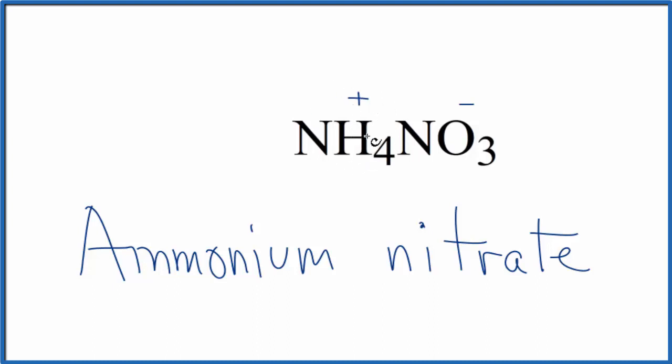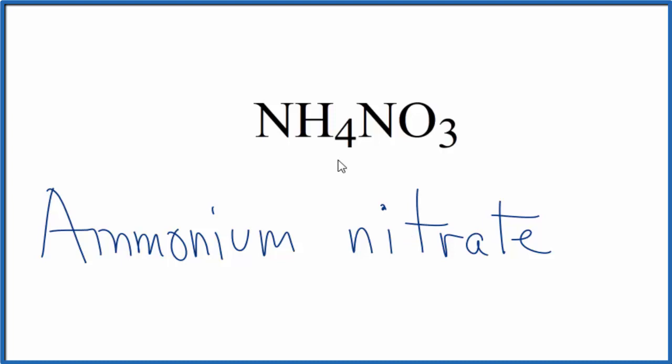It's plus, so it goes first, and then you have the nitrate ion, NO3-. You don't need to write these in the final formula. But because we have a plus and a minus, those cancel out, and the net charge is zero. So the formula for ammonium nitrate would be NH4NO3.